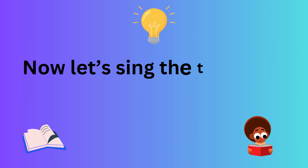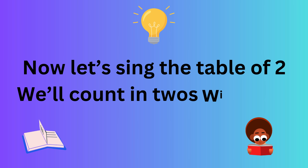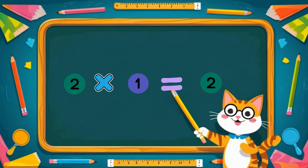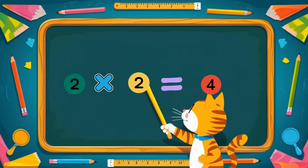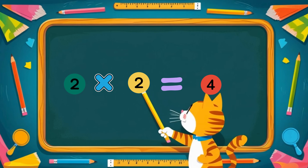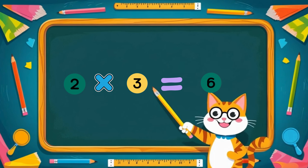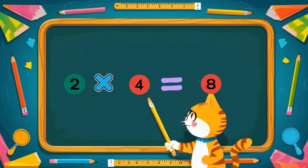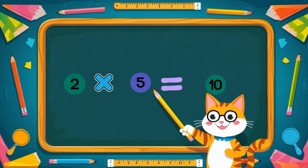Now let's sing the table of two. We'll count in twos with you. 2 times 1 is 2. 2 times 2 is 4. 2 times 3 is 6. 2 times 4 is 8. 2 times 5 is 10.